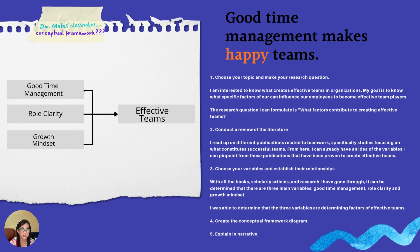Now I choose my variables. With all the books, scholarly articles, and research that you would have gone through, it can be determined here that the three main variables are good time management, role clarity, and growth mindset, affecting the creation of effective teams. I was able to determine that these three variables are determining factors of effective teams. Then I create the conceptual framework diagram, which you can see here in this slide. And then I will explain everything in narrative format — maybe three or four paragraphs explaining how good time management, role clarity, and growth mindset each affect effective teams.